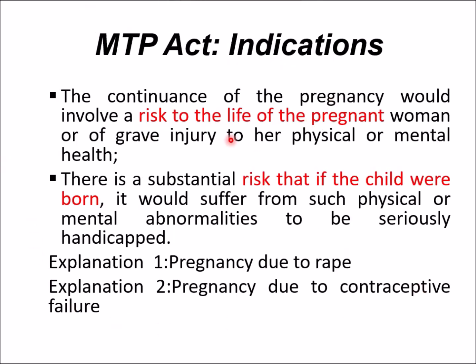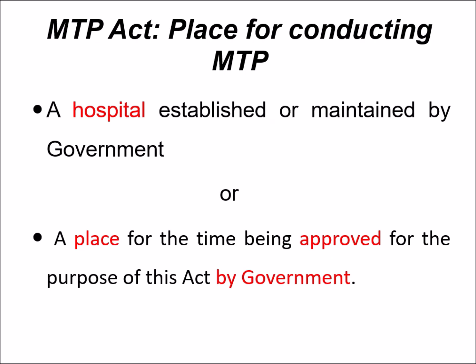Different indications under the MTP Act: first, if the continuance of pregnancy would involve a risk to the life of the pregnant woman or cause grave injury to her physical or mental health. Second, if there is a substantial risk that the child would be born with such physical or mental abnormalities as to be seriously handicapped. Explanations include: if the pregnancy is due to rape, or if the pregnancy is due to contraceptive failure.